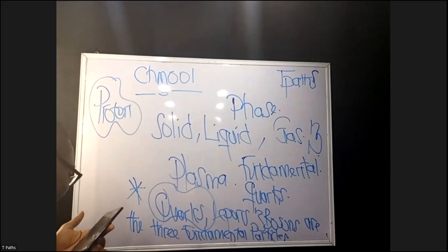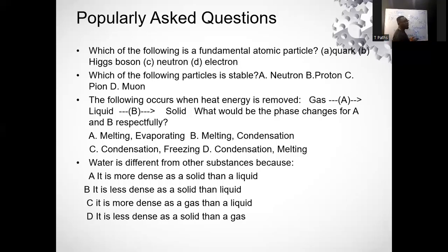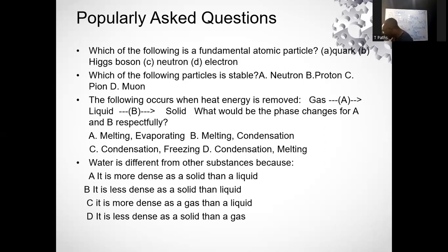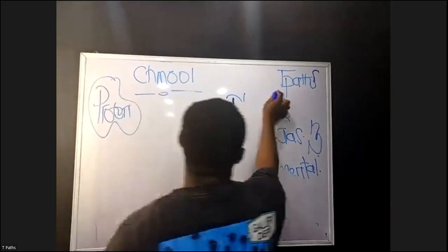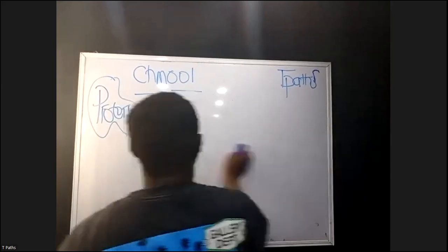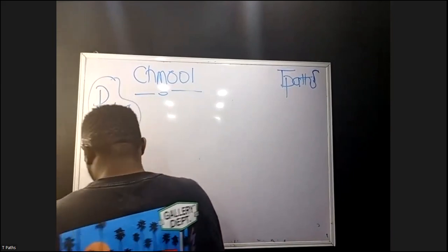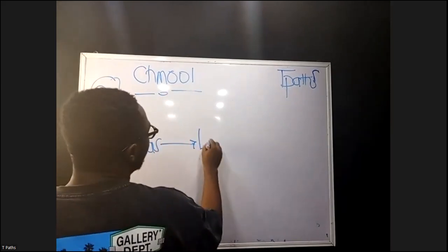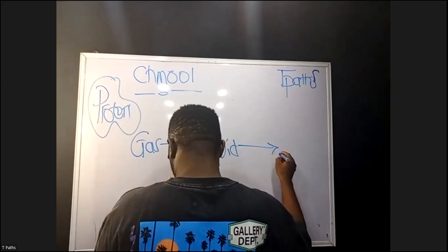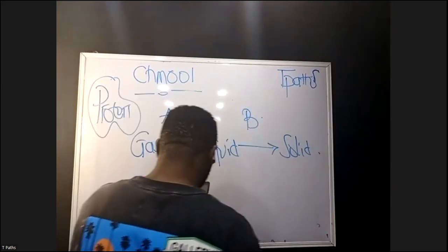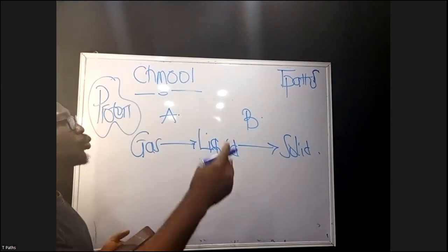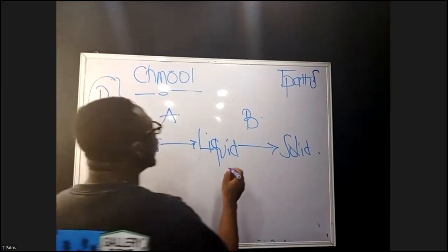The next question asks about what occurs when energy is removed — specifically gas to liquid, and liquid to solid. This is about how the nature of matter changes from one state to another. From liquid to solid is what is known as freezing — for example, when you take water and put it in a fridge, it turns to ice. That process is called freezing.